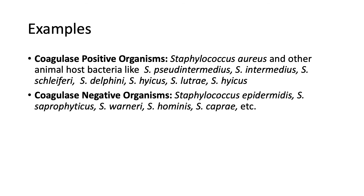Staphylococcus aureus is a coagulase-positive bacterium. Other bacteria that are coagulase-negative include Staphylococcus epidermidis, Staphylococcus saprophyticus, and other coagulase-negative bacteria. That is all about the coagulase test. If you liked this video, please don't forget to subscribe and like. Thank you.